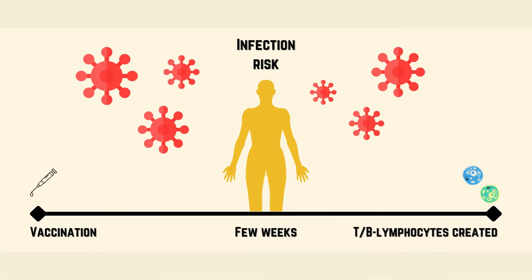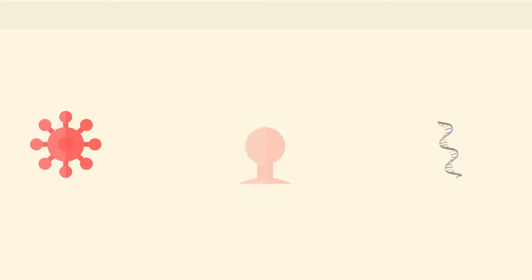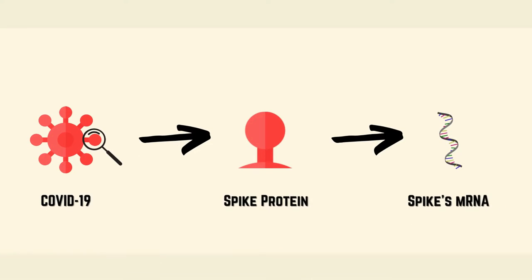After immunization, the body usually takes a few weeks to create T-lymphocytes and B-lymphocytes. As a result, because the vaccine has not had enough time to provide protection, a person infected with a disease immediately before or just after immunization may develop symptoms and get the disease.